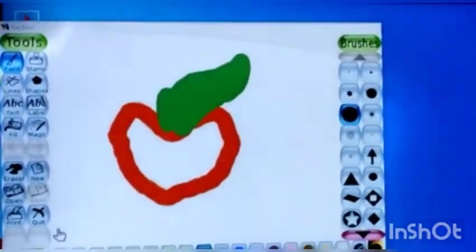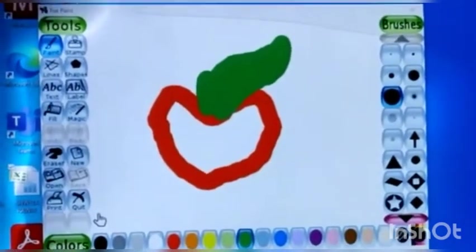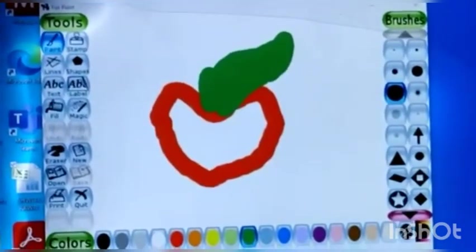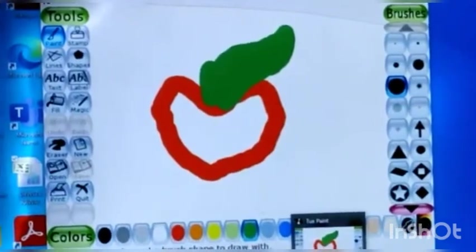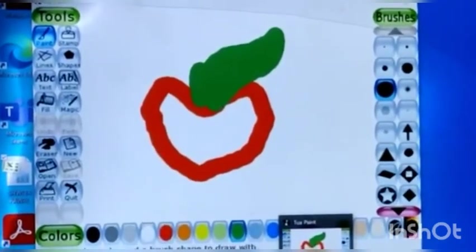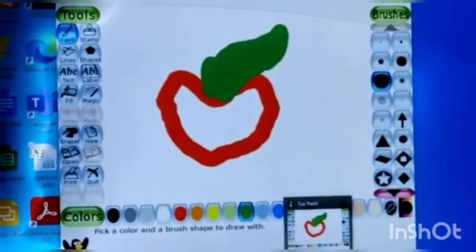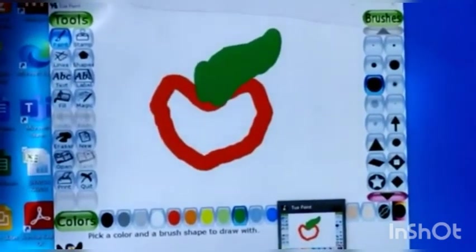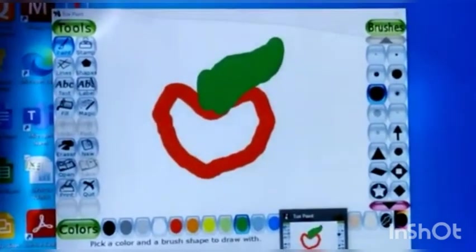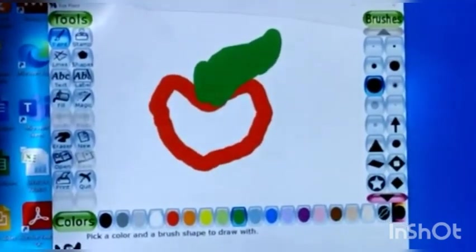You can see the use of open button. We have learnt the save button and open button. Save button is used to save the drawing and open button is used to open the saved drawing. If we have saved something and want to open it, we will use the open button. So we have completed this chapter.